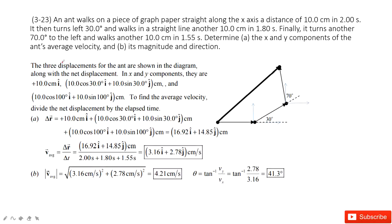They tell us there is an object. It moves along the x direction, a distance of 10 cm in 2 seconds. Then it turns left 30 degrees and walks in a straight line another 10 cm in 1.8 seconds.